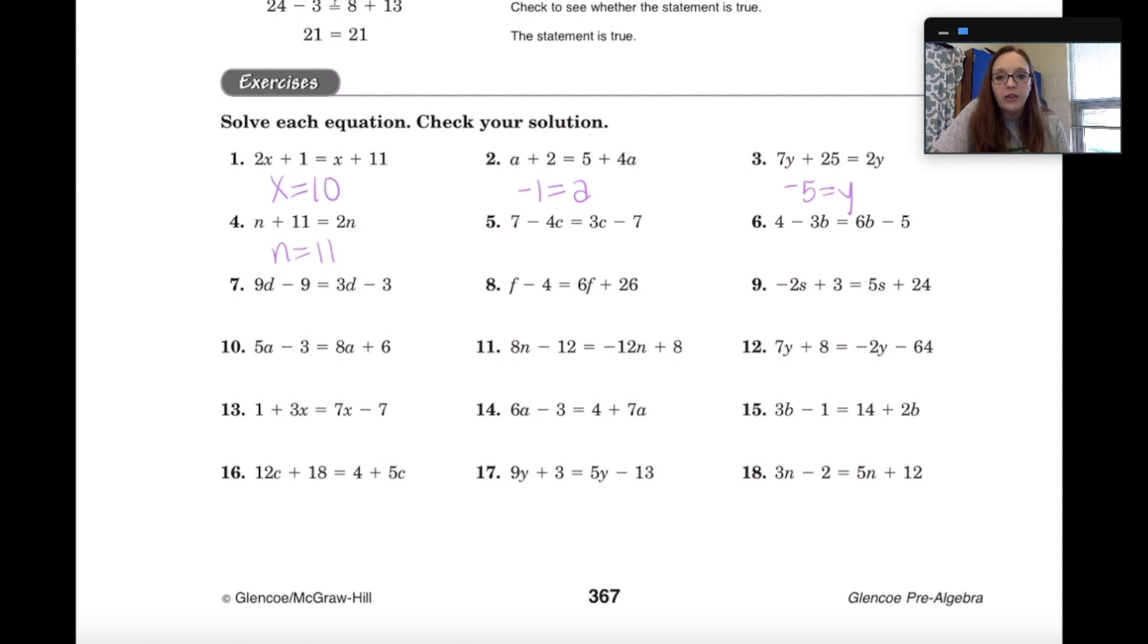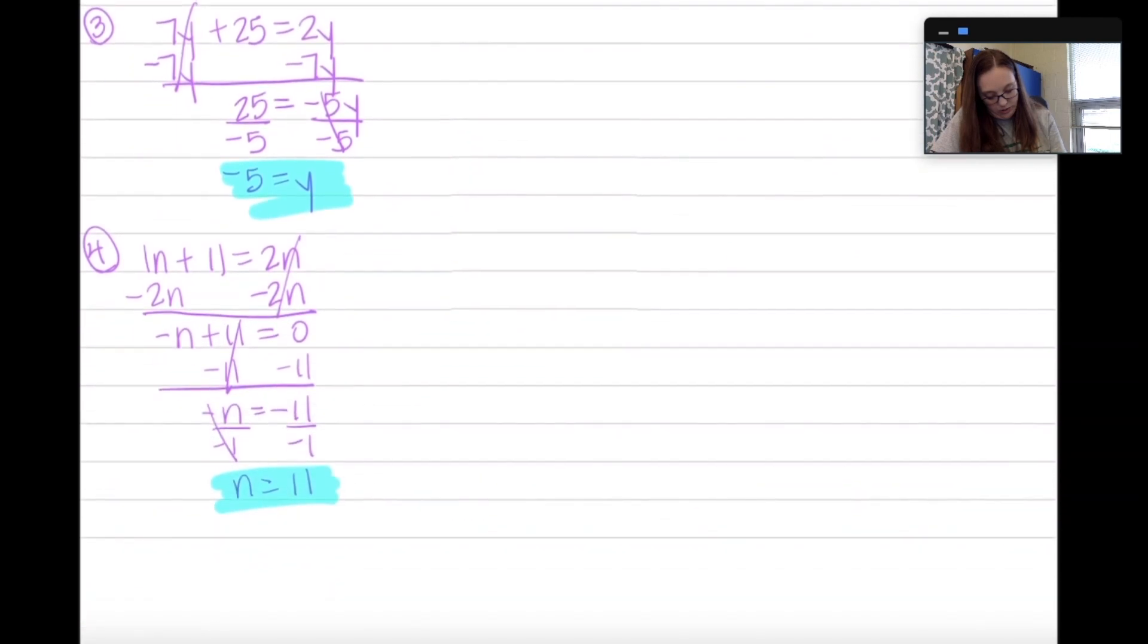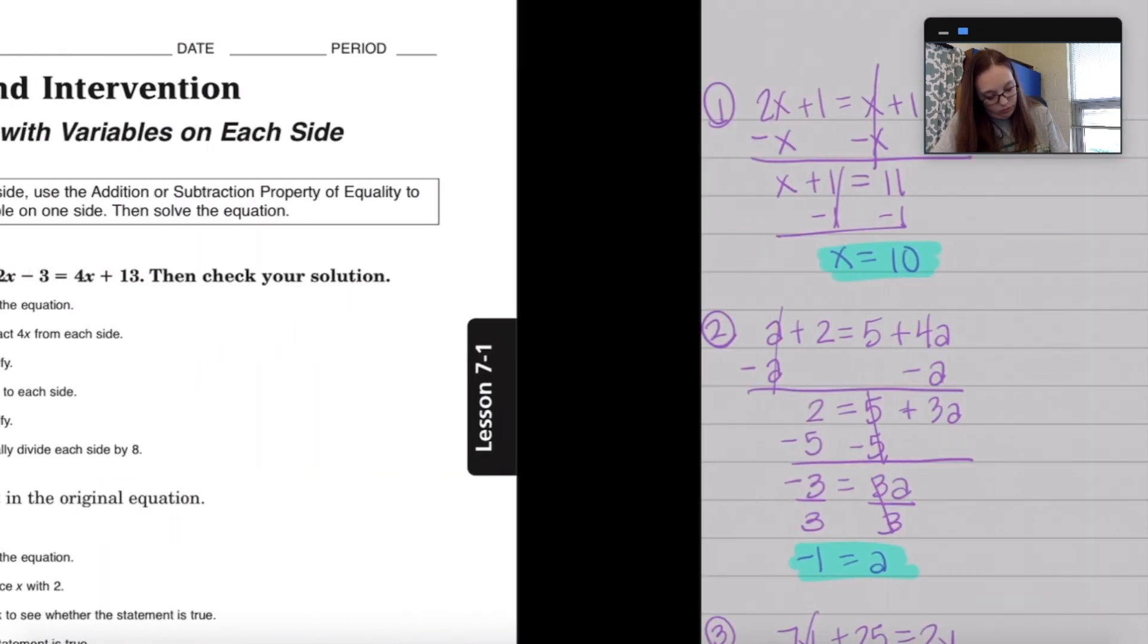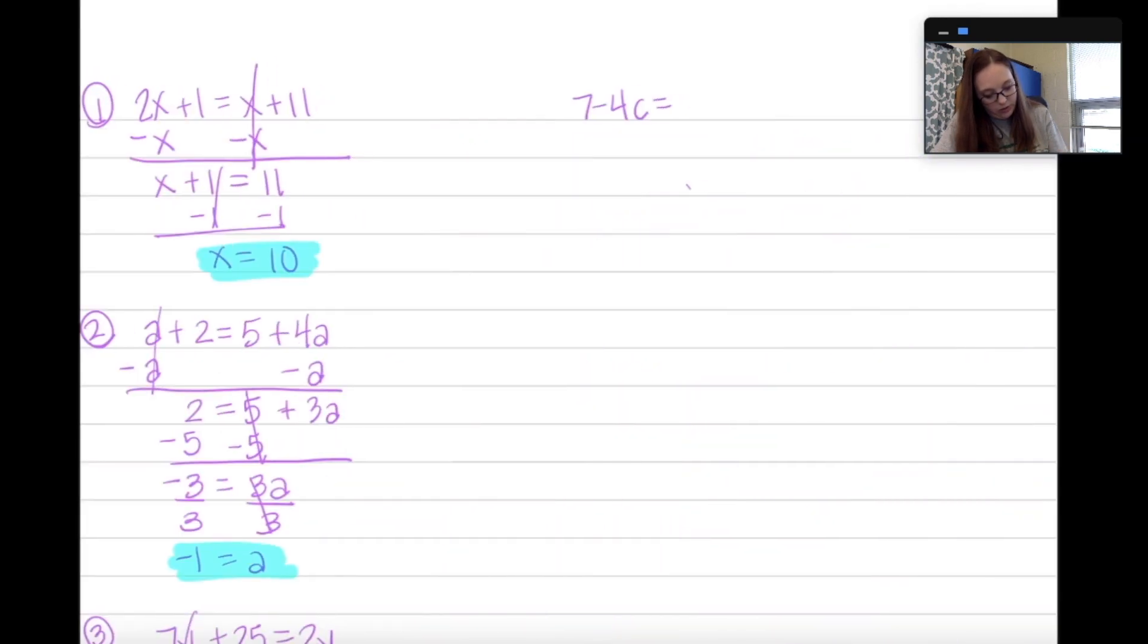That's 7 minus 4C equals 3C minus 7. Do I have any like terms here? No. Check on the right. Do I have like terms there? No. So I'm either going to, see how it says minus 4C? So I would either add 4C or subtract 3C on both sides, whichever one you want to work with. I think it will be easier to add the 4C. So treat this as negative 4C. So that cancels. So 7 equals 7C minus 7.